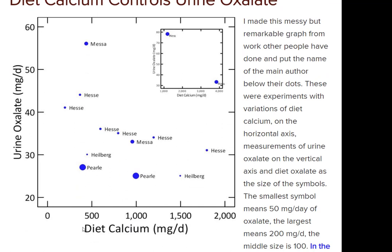This graph shows the amount of calcium you eat versus the amount of oxalate in the urine. The size of the dot represents the amount of oxalate eaten by the subjects in these experiments. The smallest was 50 mg/day of oxalate, the biggest is 200, and the middle is 100. Whatever you're eating, as diet calcium goes up, urine oxalate goes down. When you get to 1,000 or 1,200 mg of calcium — what you should eat for bone health — it's very hard to find urine oxalates whose average is much above 35.